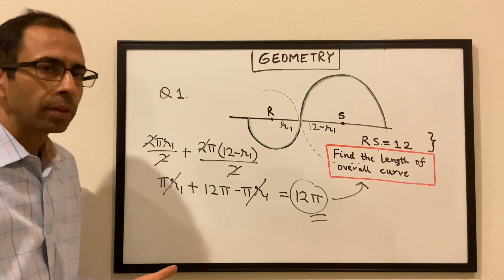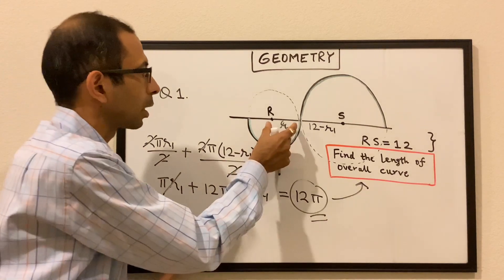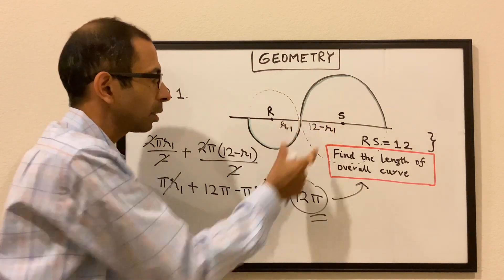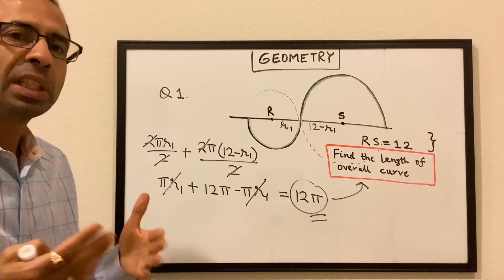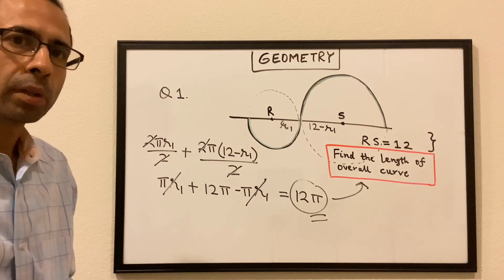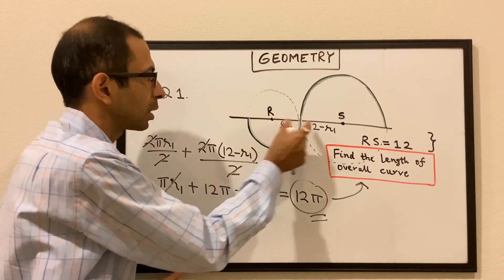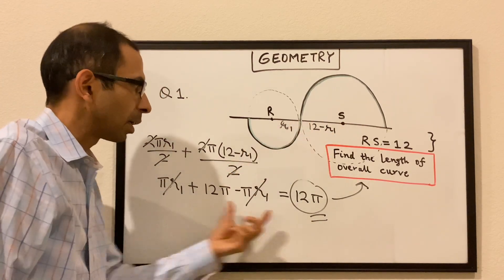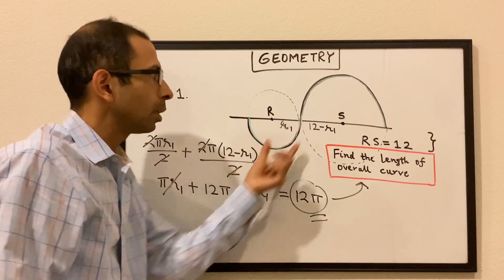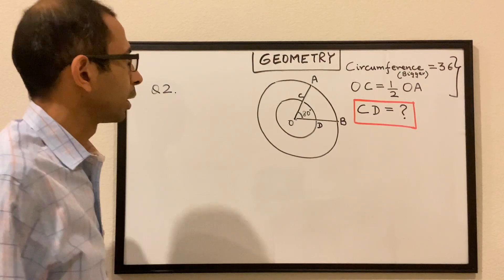Just to quickly reiterate: we didn't know the individual radius, but as we just saw, we don't need to know the individual radius, because the R1s cancel by themselves and we get the value of the length. Okay, next question.